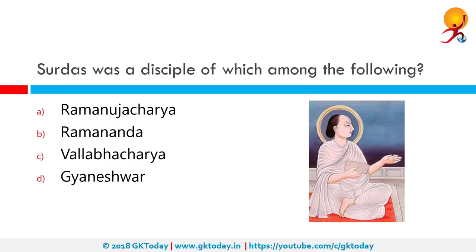Surdas was a disciple of which among the following? The correct answer is Vallabhacharya, who is also known as Vallabha and was a Hindu theologian and philosopher who founded the Krishna-centered Pushti sect of Vaishnavism in the Braj region of India and the philosophy of Shuddha Advaita.